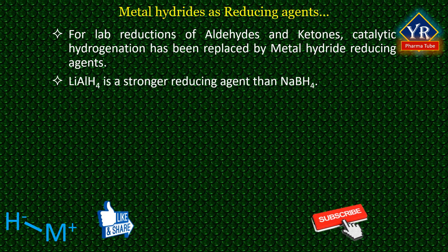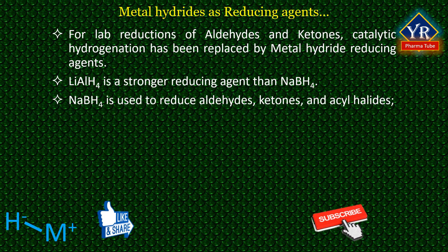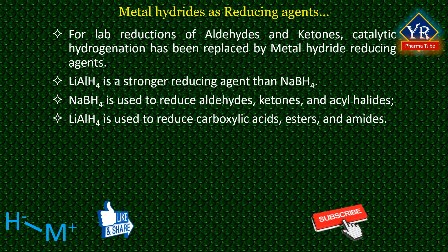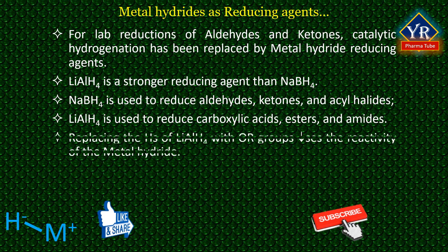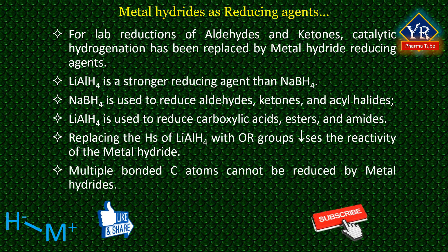Lithium aluminium hydride is a stronger reducing agent than sodium borohydride. Sodium borohydride is used to reduce aldehydes, ketones, and acyl halides, while lithium aluminium hydride is used to reduce carboxylic acids, esters, and amides. Replacing some of the hydrogens of lithium aluminium hydride with alkoxy groups decreases the reactivity of the metal hydride. Multiple bonded carbon atoms cannot be reduced by metal hydrides.